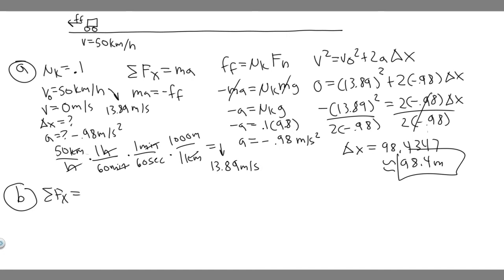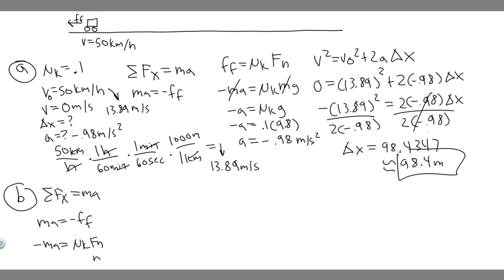For Part B, it's essentially the same process except the coefficient of friction has changed. The sum of forces in x equals ma, ma equals minus F sub f, and F sub f equals mu sub k times F sub n. Substituting and canceling mass, minus a equals mu sub k times g. Now mu sub k is 0.6, so a equals minus 0.6 times 9.8, giving a equals minus 5.88 meters per second squared. This makes intuitive sense — we decelerate faster because the coefficient of friction is much greater.